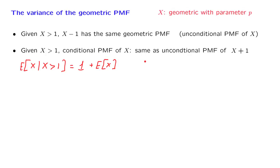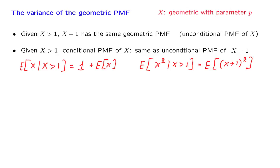By exactly the same argument, the random variable x squared has the same distribution in the conditional universe as the random variable (x plus 1) squared in the unconditional universe. So since x in the conditional universe has the same distribution as x plus 1, x squared in the conditional universe has the same distribution as (x plus 1) squared in the unconditional universe.